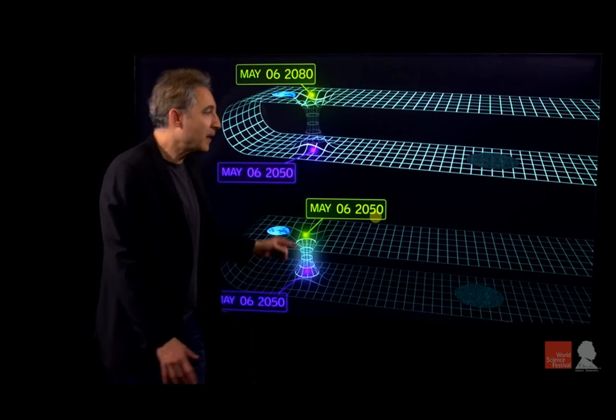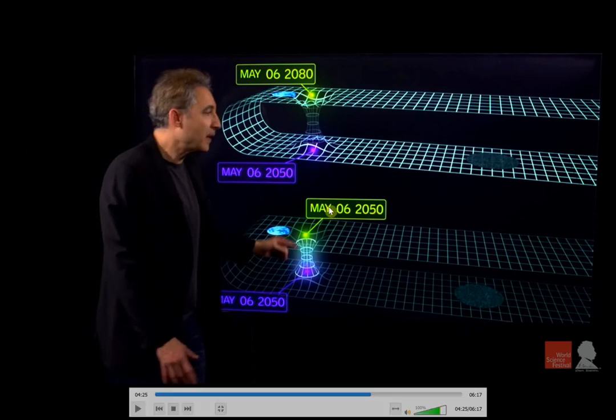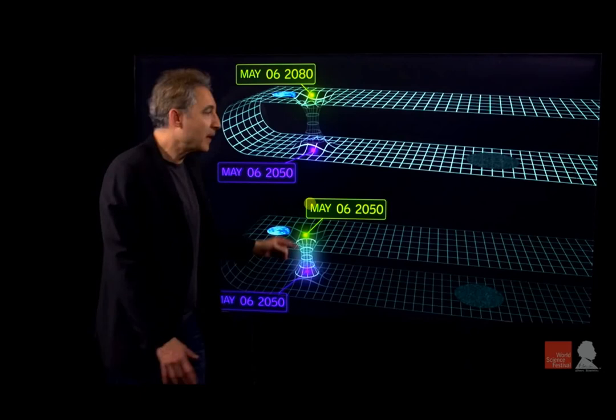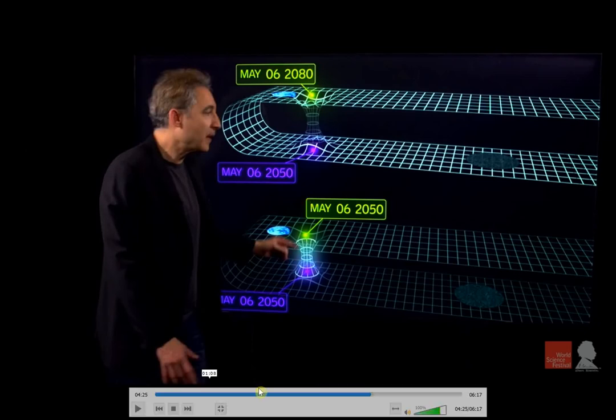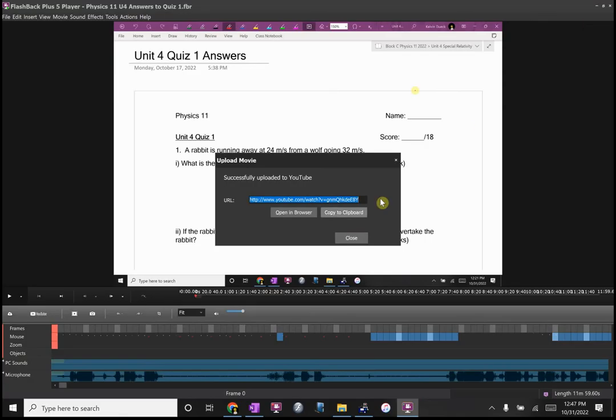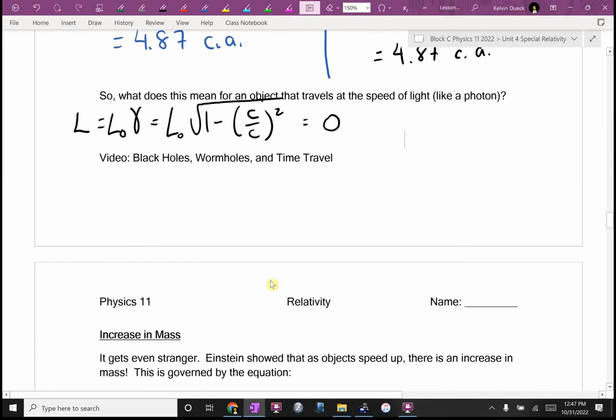We physicists suspect the universe just won't allow it because all of the paradoxes that would ensue, right? What if you prevented your grandparents from meeting? Then you would never have been born, but how could you have prevented your grandparents from meeting? All the weirdness. So we suspect traveling backwards in time, probably the universe will step in and say no, you're not. But that's a valid method that doesn't violate any of our current laws of physics. It's pretty out there, towing a black hole near a black hole, but the math works.